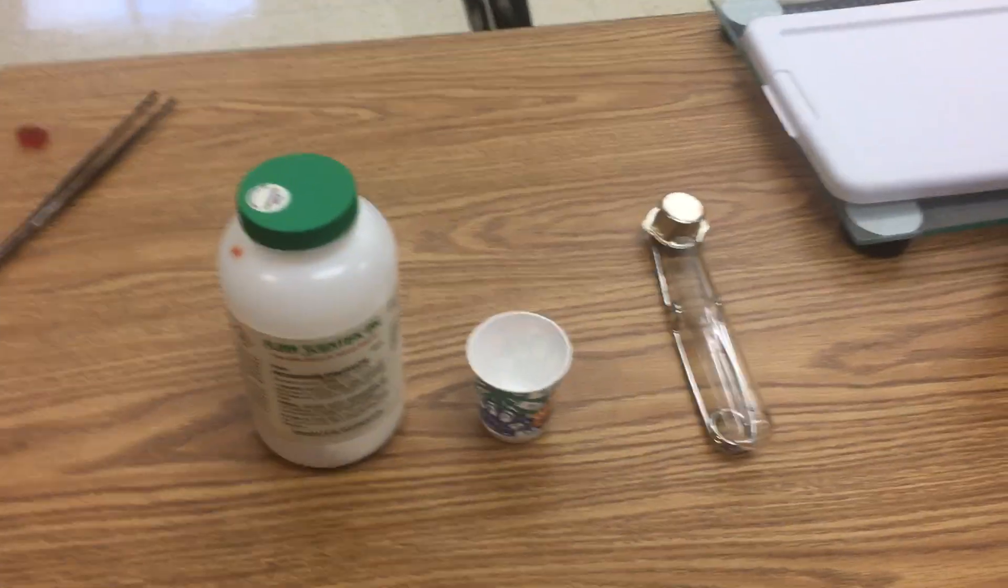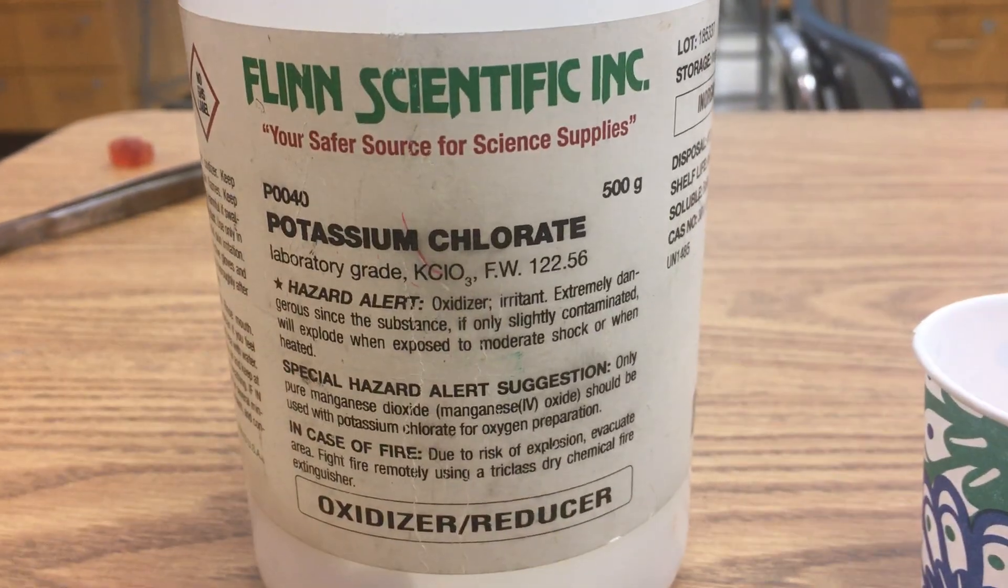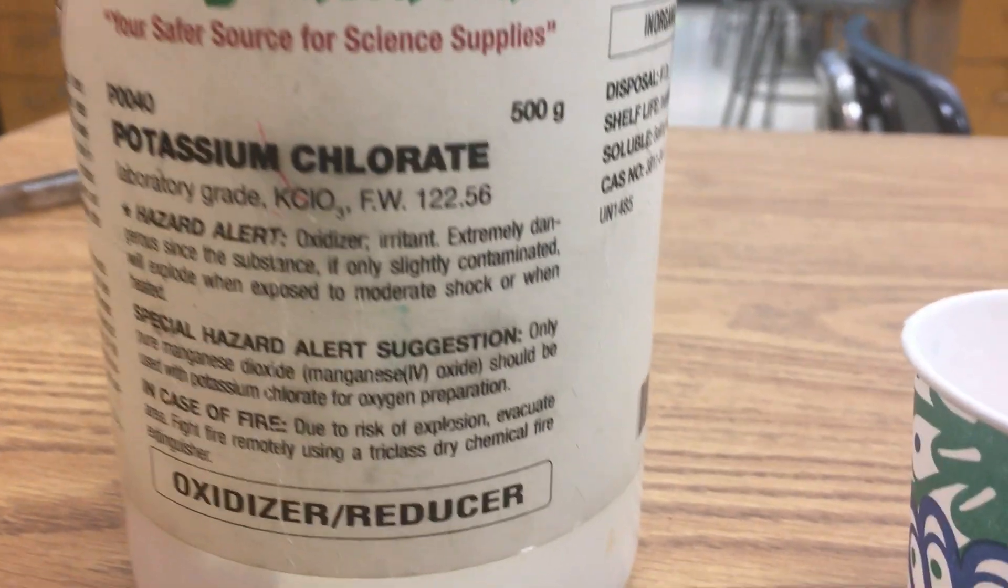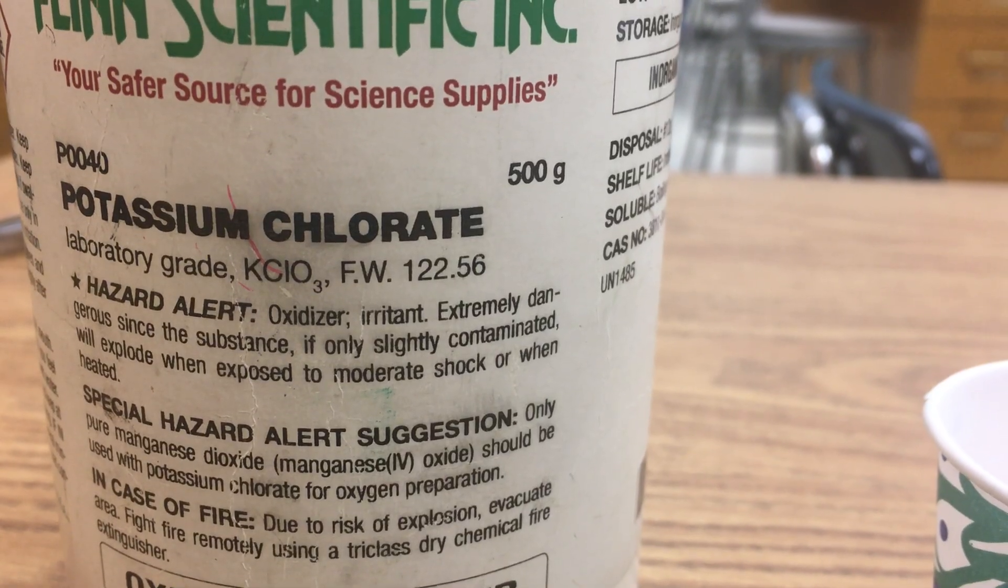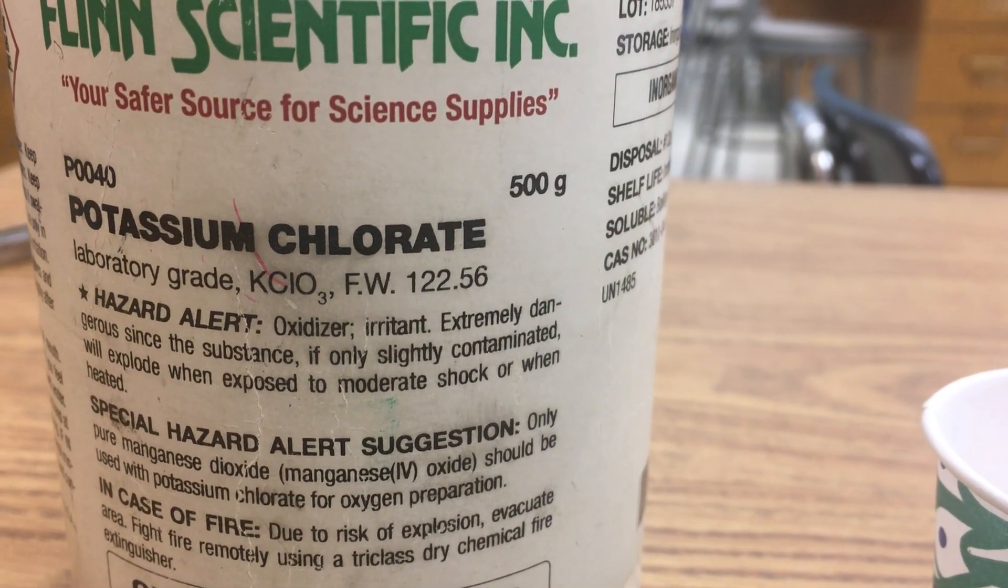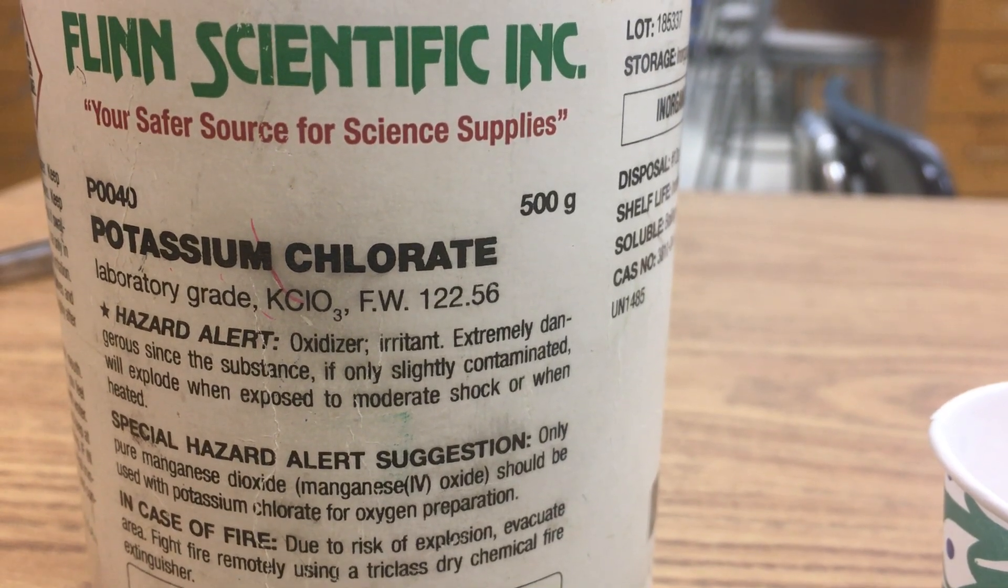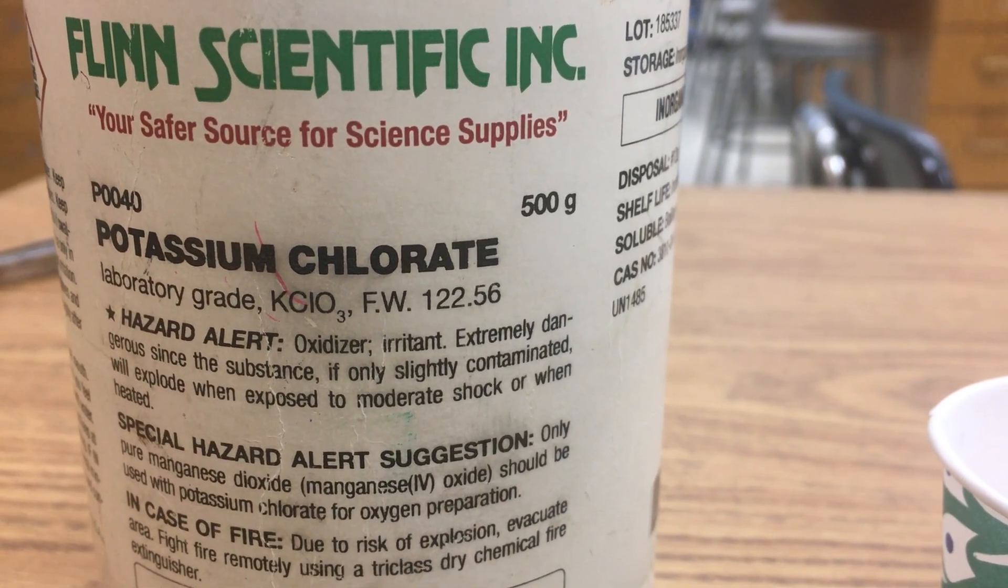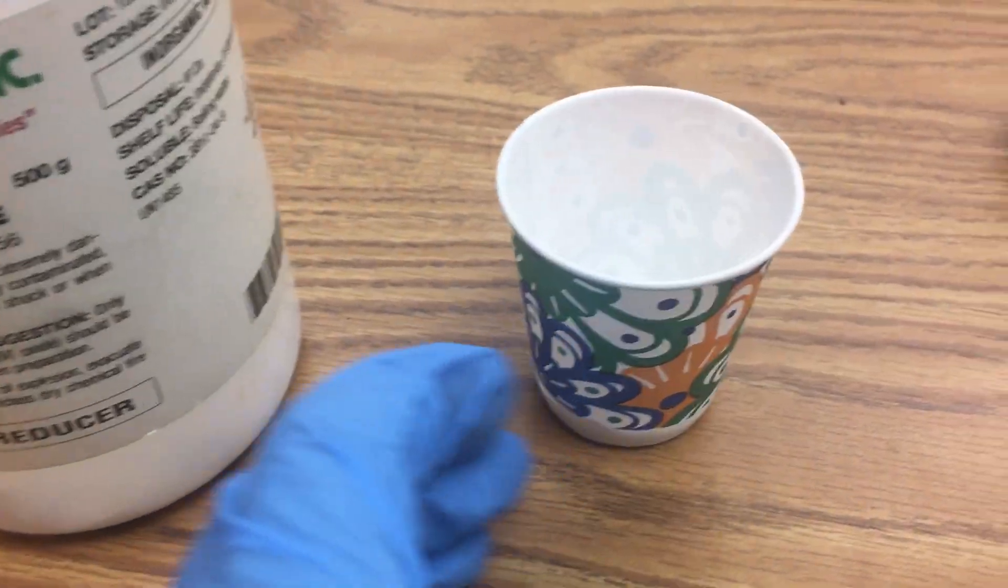The first of our reactants is potassium chlorate, and you can see the chemical formula there: K (potassium), ClO3 (chlorate). It's a polyatomic ion with negative one charge: KClO3. It is a white solid here at room temperature.